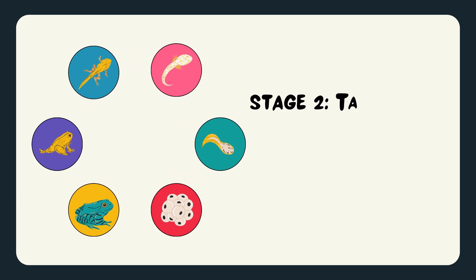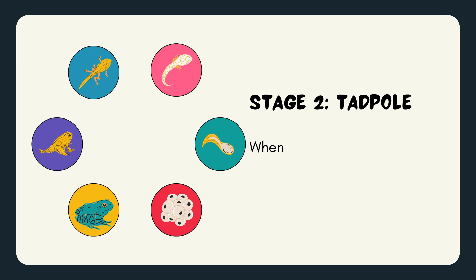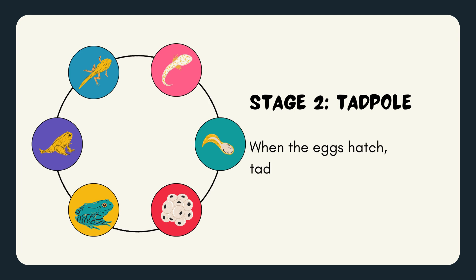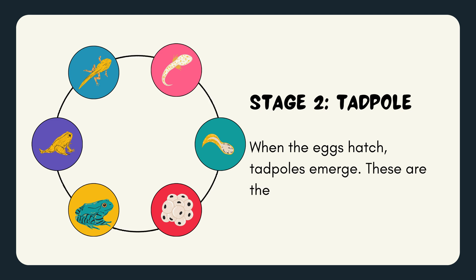Stage 2: Tadpole. When the eggs hatch, tadpoles emerge. These are the larvae of the frog.